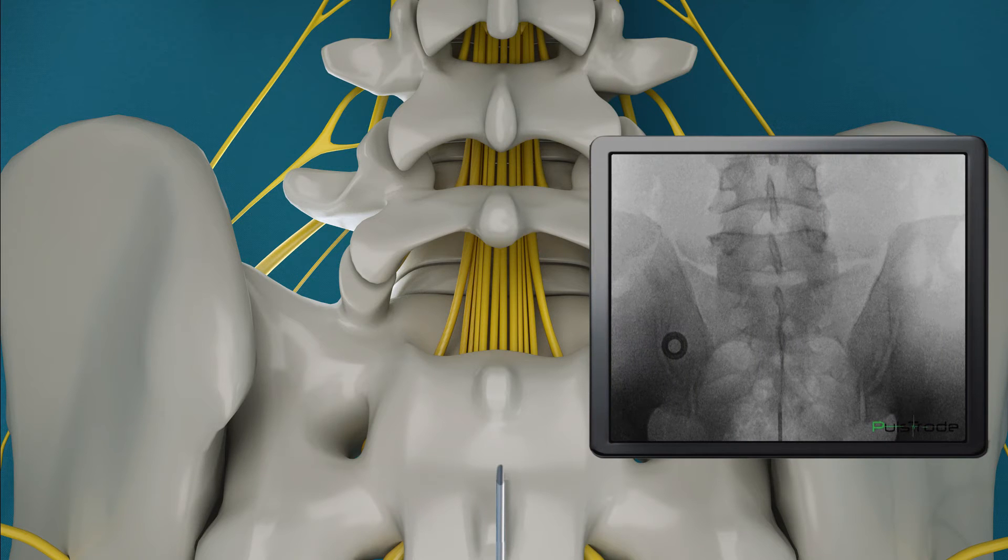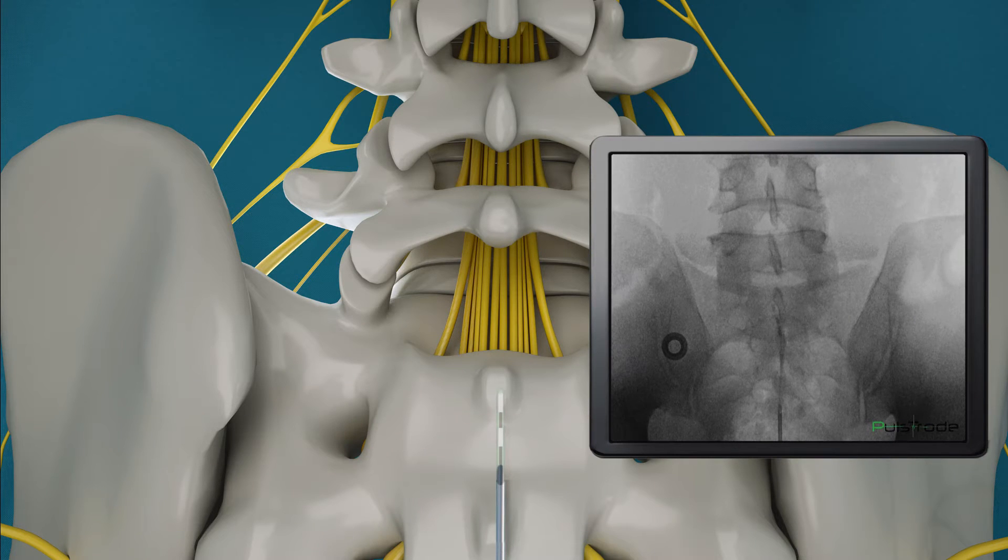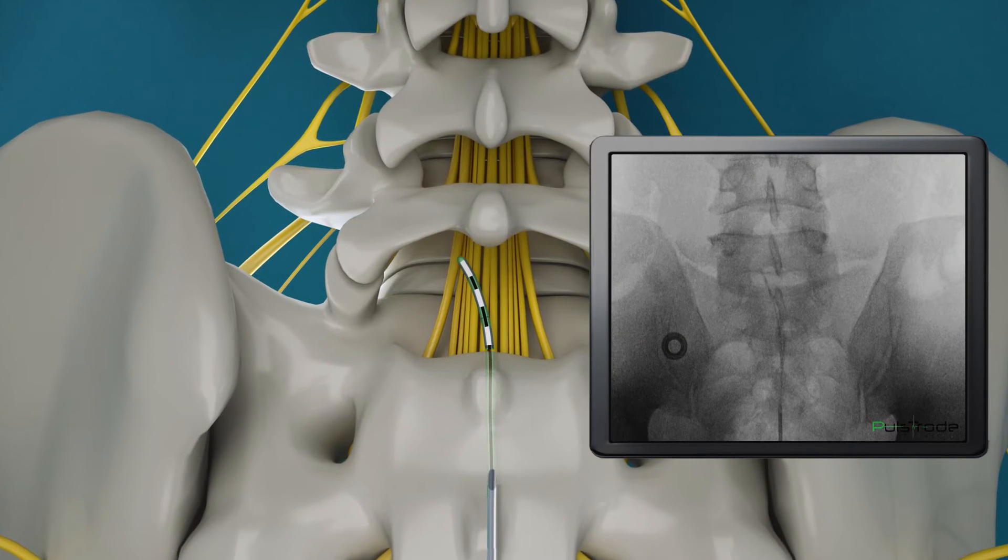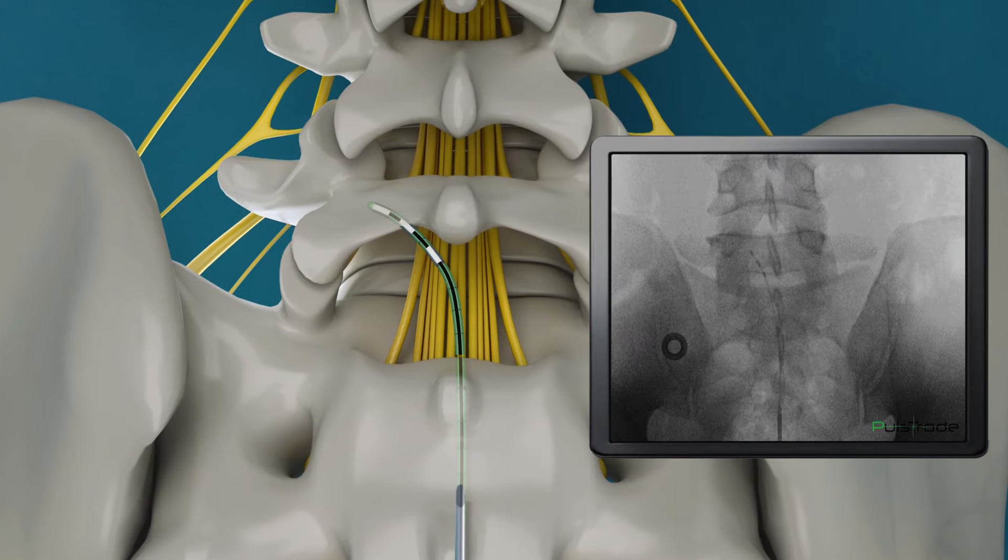Once inside the epidural space, the lead follows a path until it reaches the inflamed nerve area. This operation is conducted in fluoroscopy through a luminance amplifier or designated machinery.